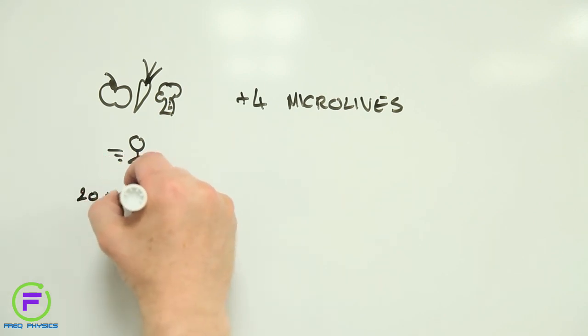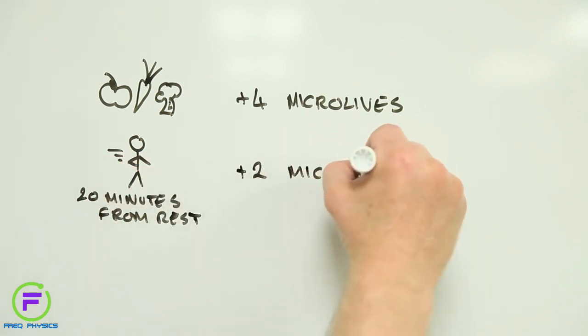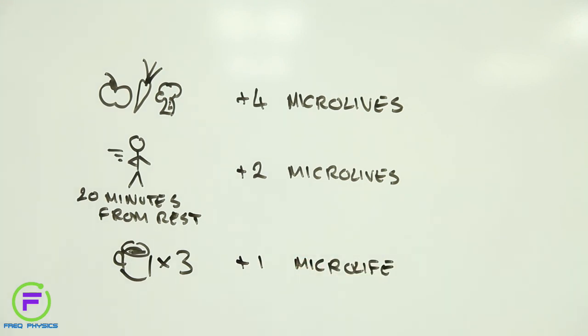20 minutes of moderate exercise from rest is worth 2 Microlives. And drinking 2 or 3 cups of coffee a day is the equivalent of 1 Microlife.